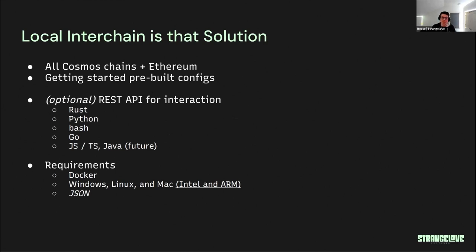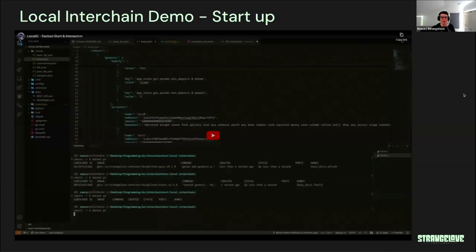Local Interchain is that solution. It has support for all Cosmos chains via Docker as well as Ethereum, with Penumbra and Polkadot support in the future. There are pre-built configs for getting started, a REST API for interaction, and by default we have Rust, Python, Bash, and Go drivers so you can use your native language of choice. JavaScript, TypeScript, and Java are coming in the future. All you need is Docker and a standard operating system - Windows, Linux, and Mac are all supported. You need to know some JSON, but there's a CLI helper that can auto-generate it.